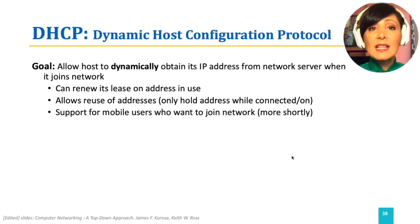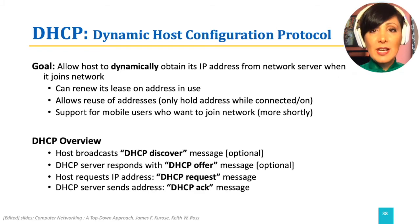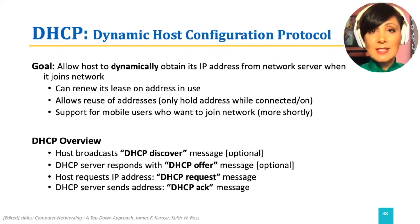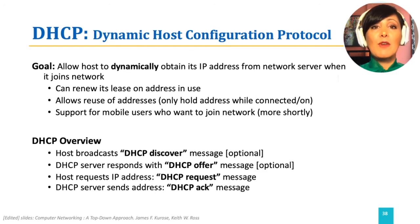DHCP is a client-server protocol. The client is typically a newcomer to the network that needs an IP address. A DHCP server or a relay agent is present at the subnet. The protocol runs in four steps: DHCP discovery, where the host tries to find a DHCP server to get an IP address from.